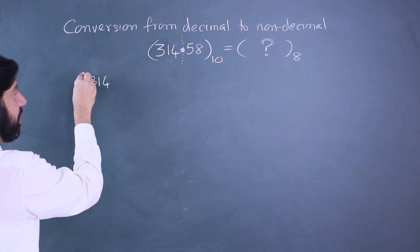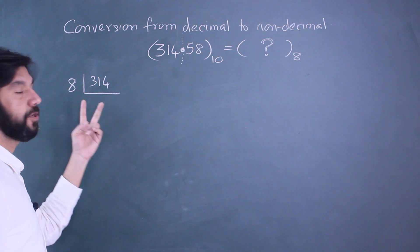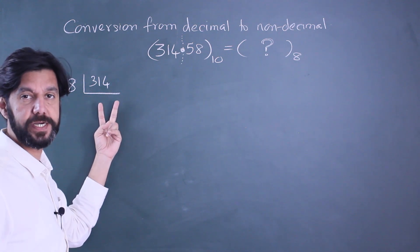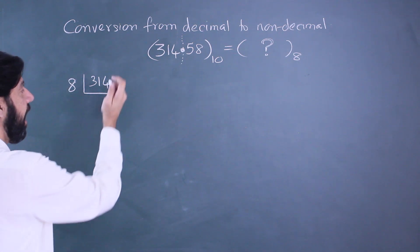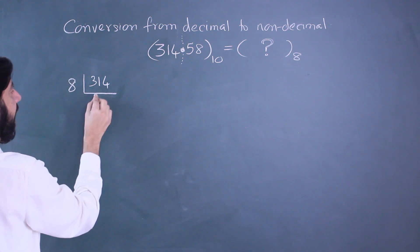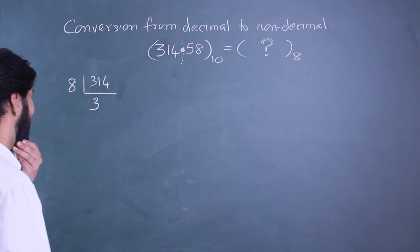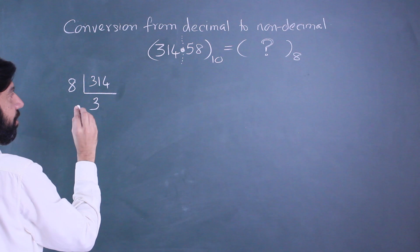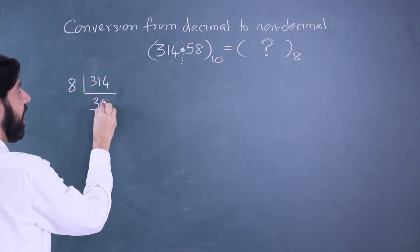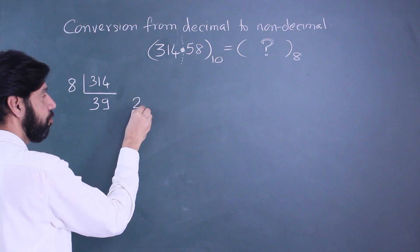Remember we are going to write it in this form: we are going to write the quotient below it and isolate the remainders. 8 into 31 - 8 threes are 24, carry 7. 8 nines are 72, so there's a remainder of 2. Write it to the right.